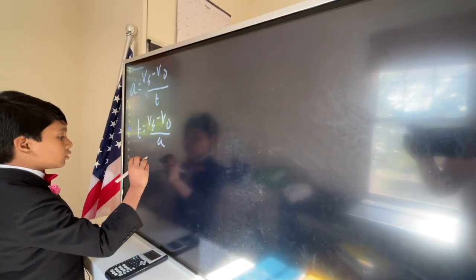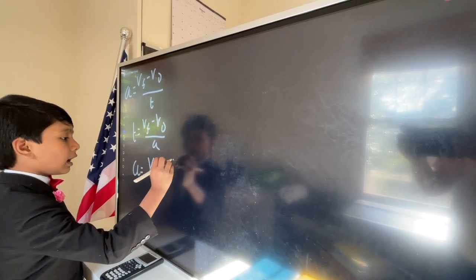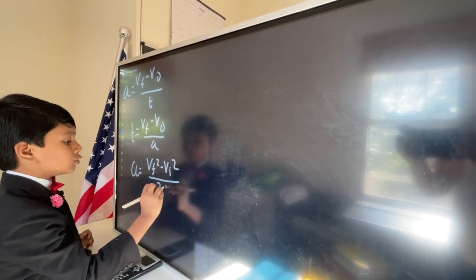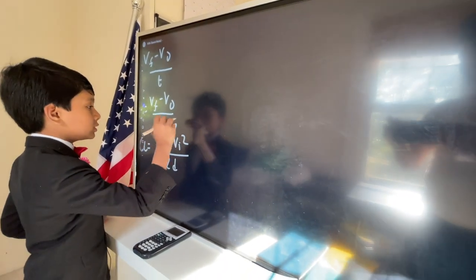That gives us a equals vf squared minus vi squared divided by 2d. Since vi squared - well, technically it's vf squared that goes to zero.